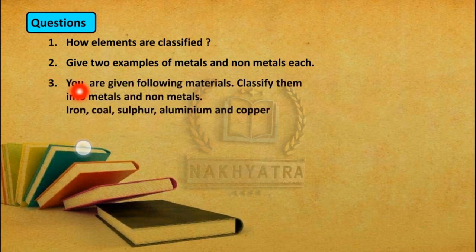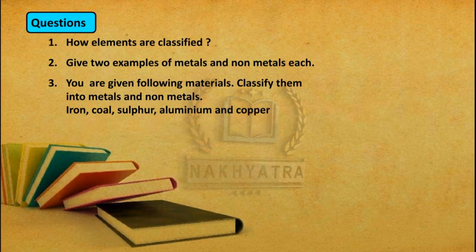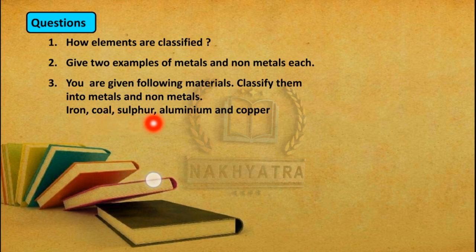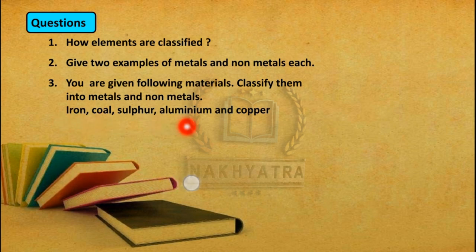Question number 3: Classify the following materials into metals and non-metals — iron, coal, sulfur, aluminium, and copper. Iron is a metal. Coal is a non-metal. Sulfur is also a non-metal. Aluminium is a metal. Copper is also a metal. So we can classify iron, aluminium, and copper as metals, whereas coal and sulfur are non-metals.